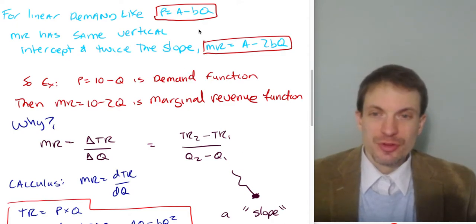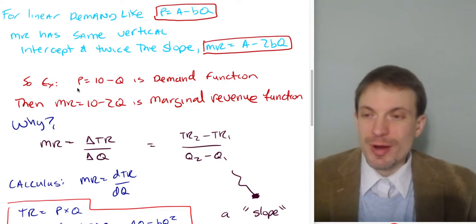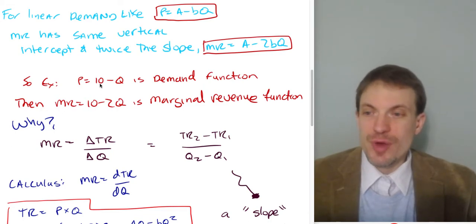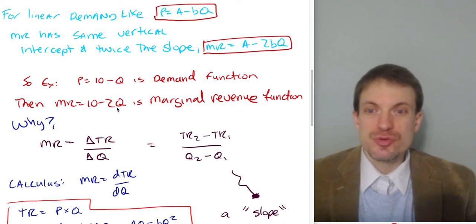So for example, how would this look for some numeric example? Well, if inverse demand is price is equal to 10 minus Q, then marginal revenue, same vertical intercept, twice the slope, will be 10 minus 2Q for marginal revenue. And I'll show the graph.